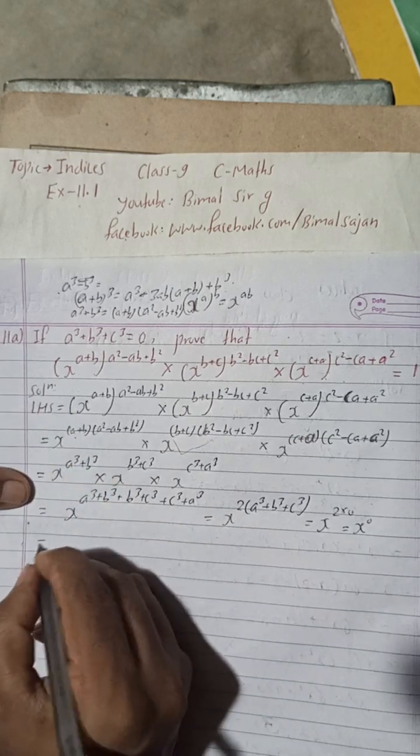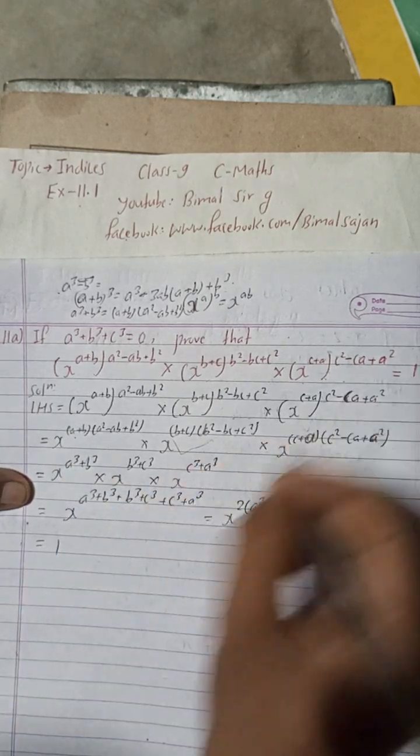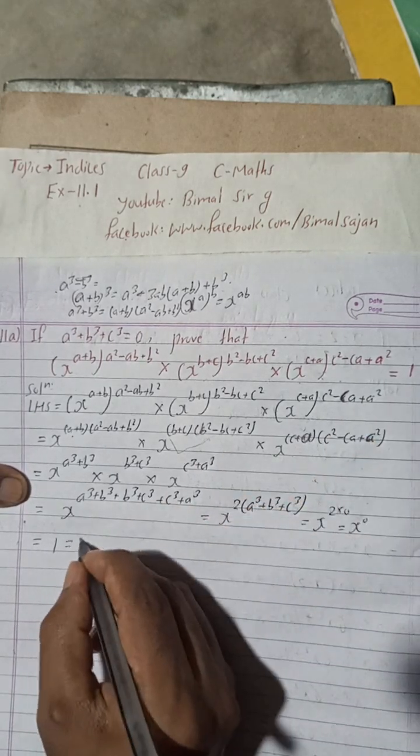It is given 0, so 2×0 that is equal to x to the power 2×0 is 0. So x to the power 0 means 1, so we got this is the one to prove. So this is equal to RHS, proved.